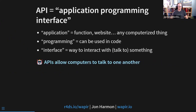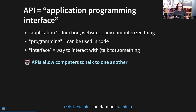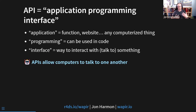In that abbreviation, 'application' means a function or a website or pretty much any computerized thing. 'Programming' means it can be used in code, and 'interface' is just a way to interact with or talk to something. So APIs allow computers to talk to one another.